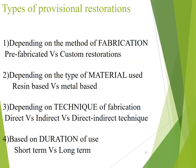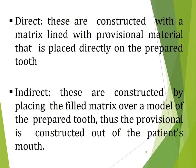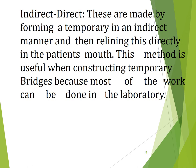Depending on the fabrication, provisionals can be prefabricated or custom fabricated. A custom-made provisional restoration is a negative reproduction of either the patient's teeth before preparation or a modified diagnostic cast; it can be obtained directly with an impression material. There are three techniques: direct — constructed with a matrix lined with provisional material placed directly on the prepared teeth; indirect — constructed by placing the filled matrix over a model of the prepared tooth; and this indirect technique is used at our college.